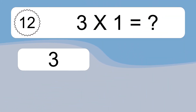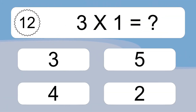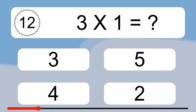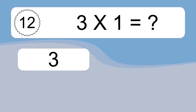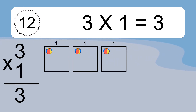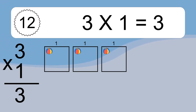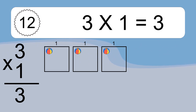3 times 1 equals what? 3 times 1 equals 3. We have 3 boxes, and each box has 1 colorful ball inside. If you count all the balls in all the boxes together, you will have 3 times 1 balls. This equals 3 balls.